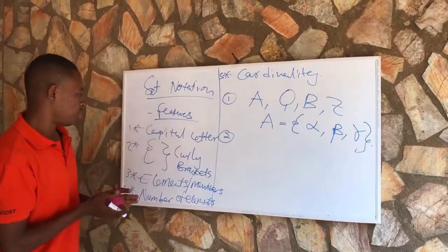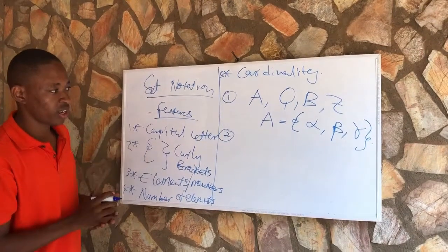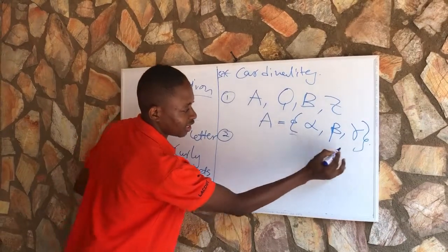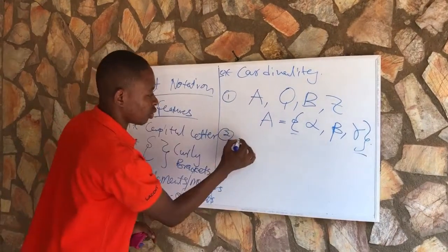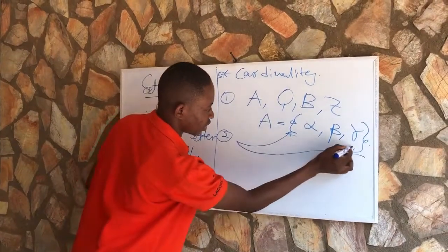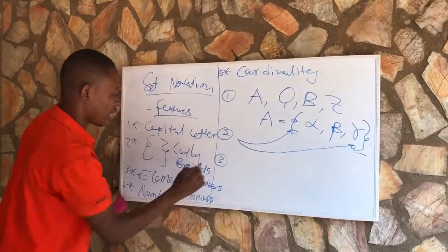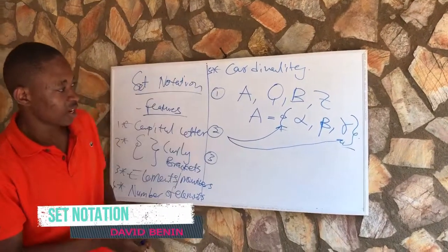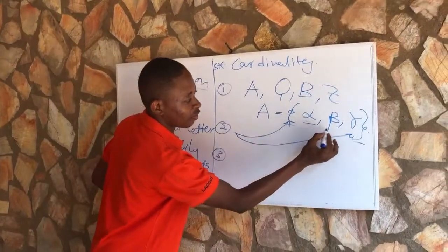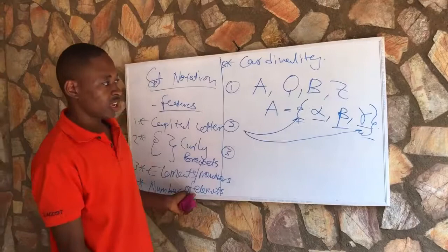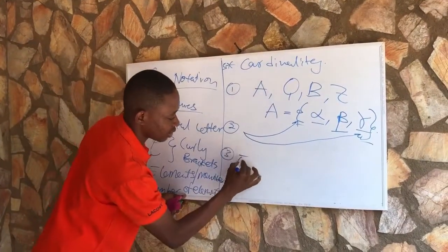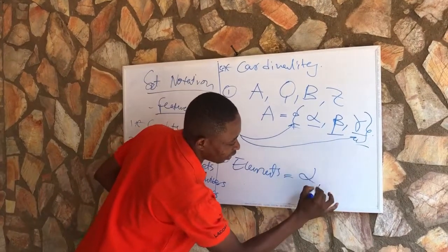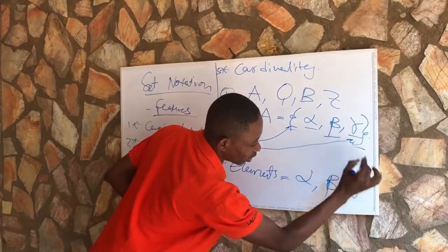The next thing we talked about is that a set is represented by curly brackets. As we can clearly see from this example, we have the sets enclosed in curly brackets. The third thing is the elements — if you look at set A, the elements of the set are alpha, beta, and gamma.